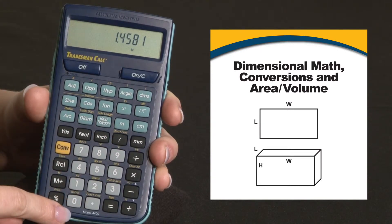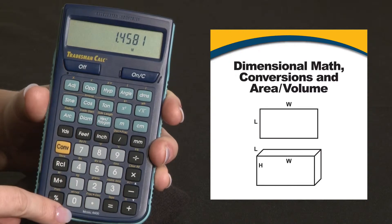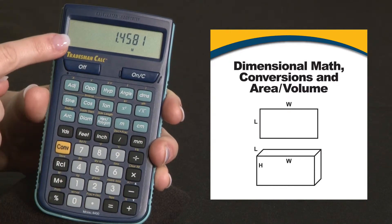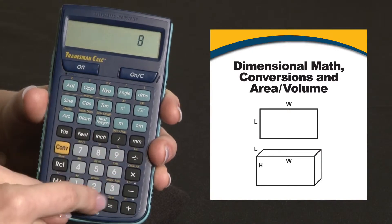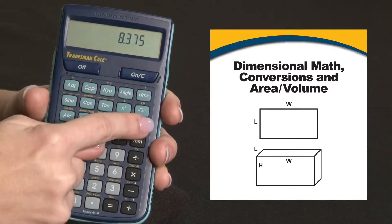You can also calculate areas and volume. Let's say that one side of our rectangle is the value we just calculated and the other side is 8.375 centimeters.